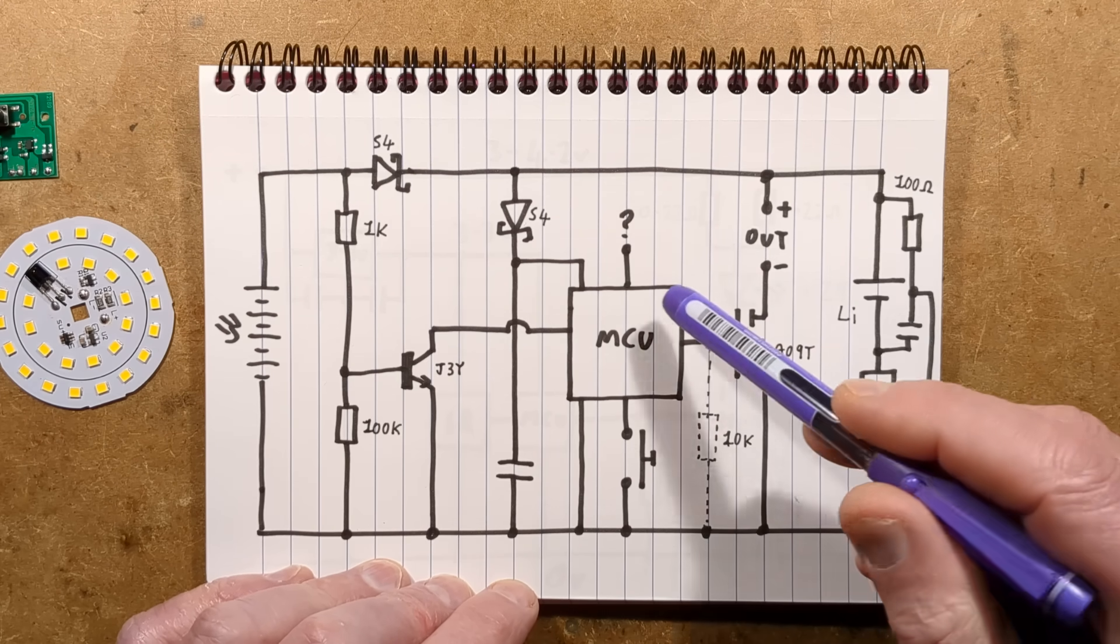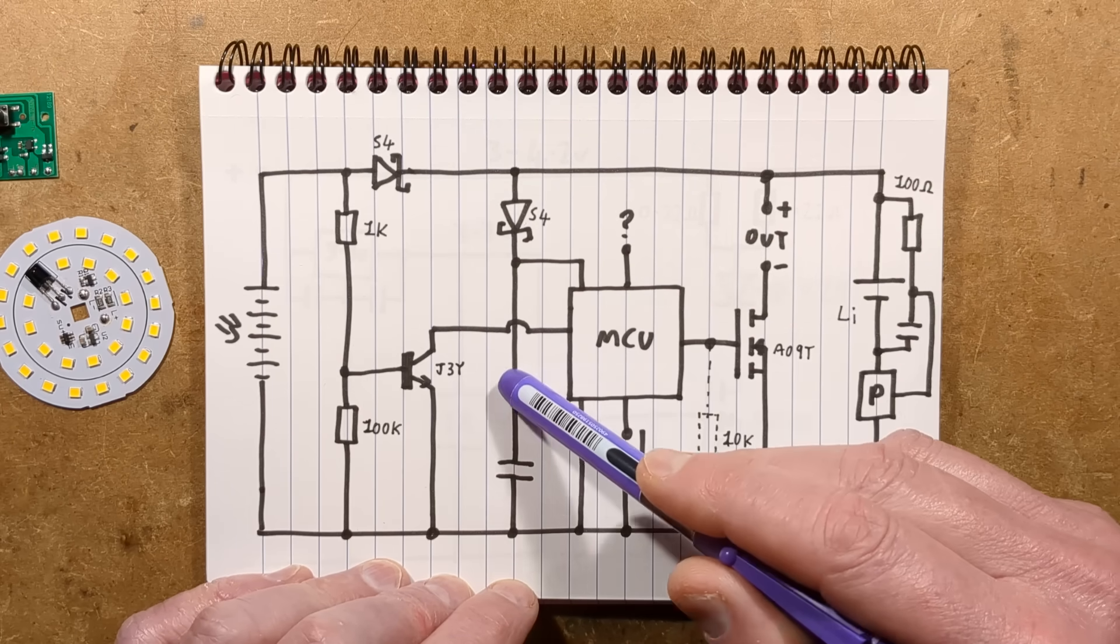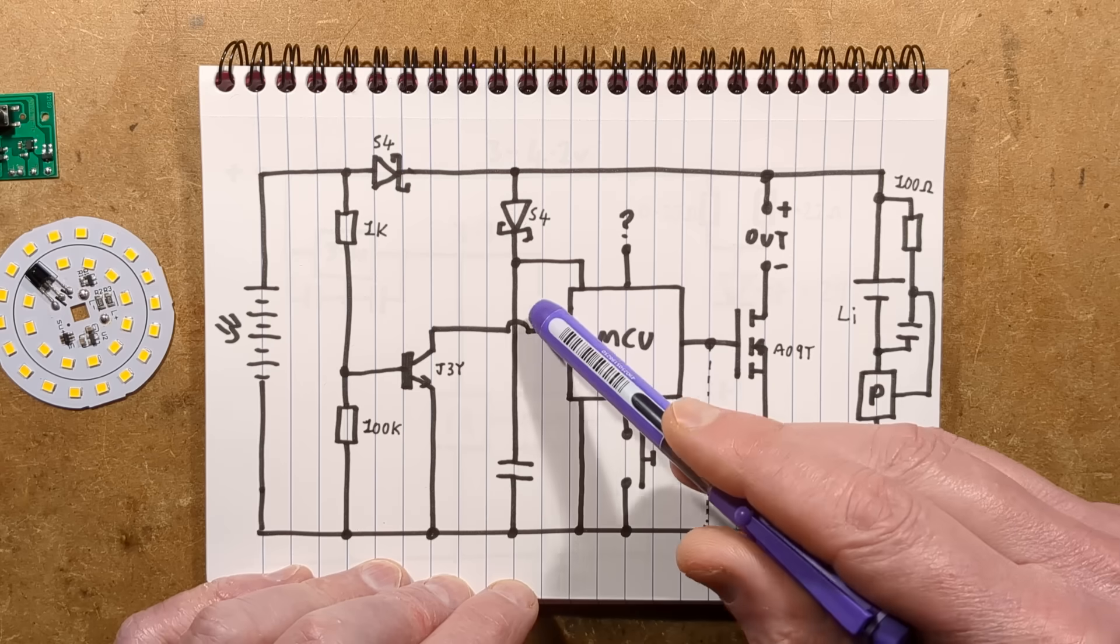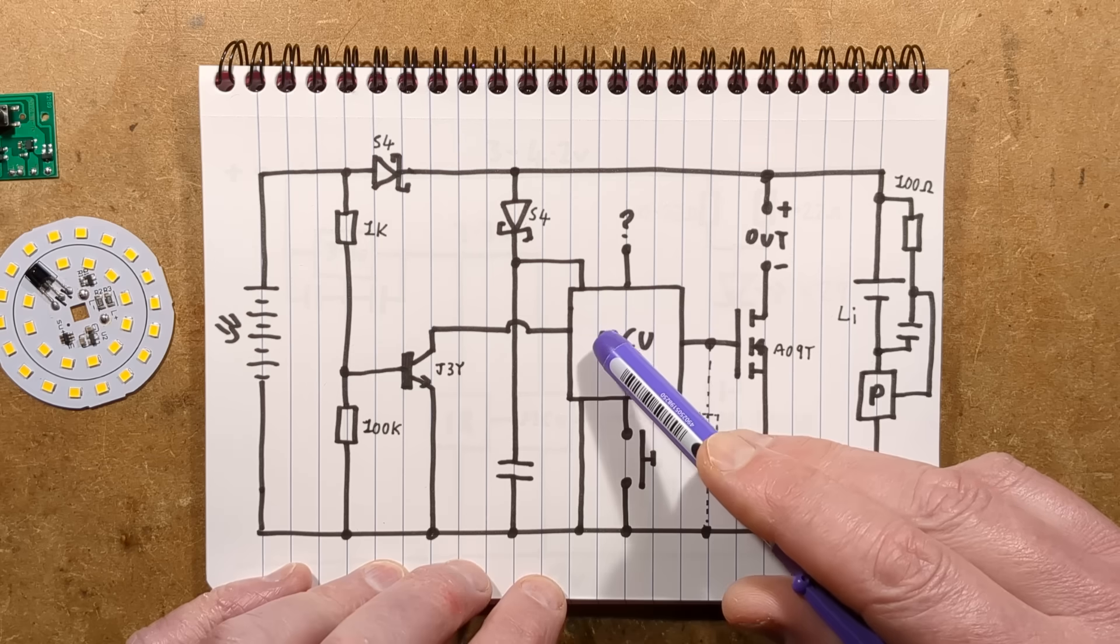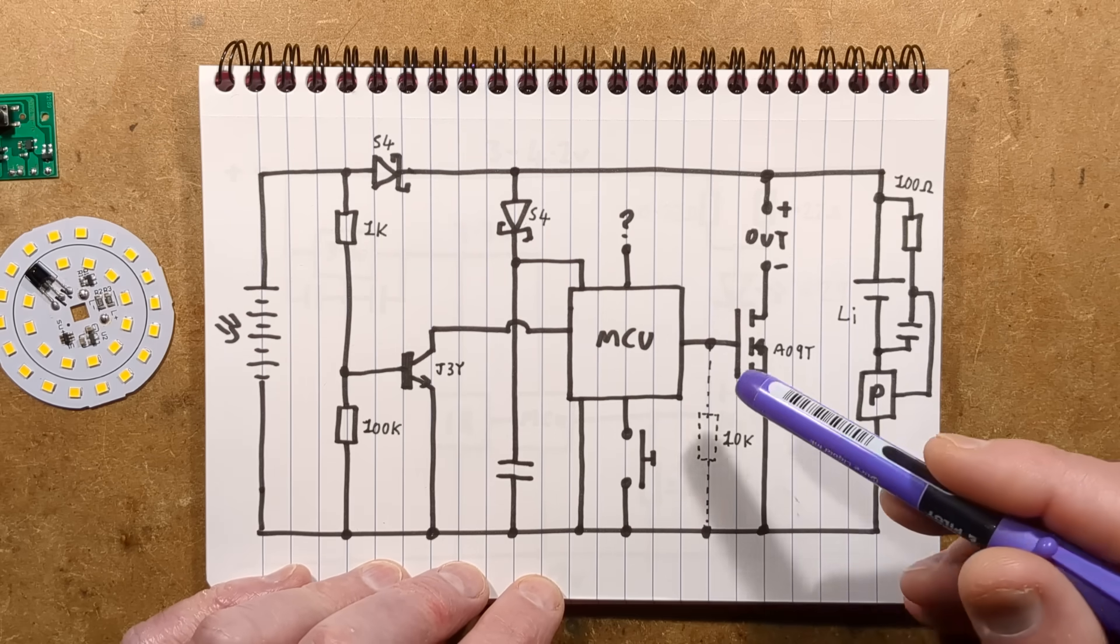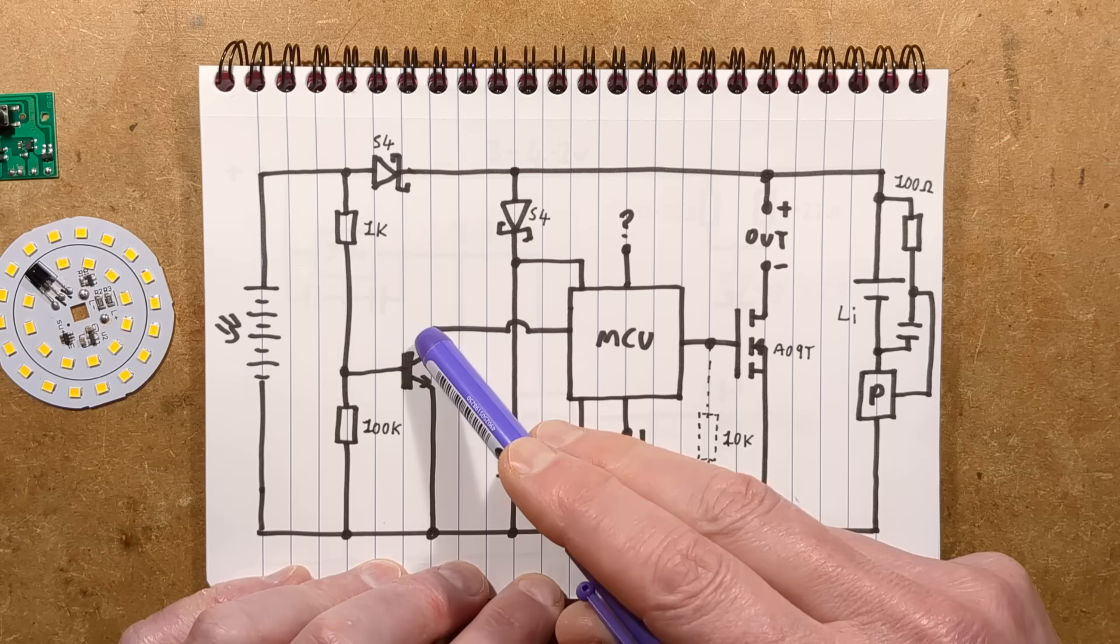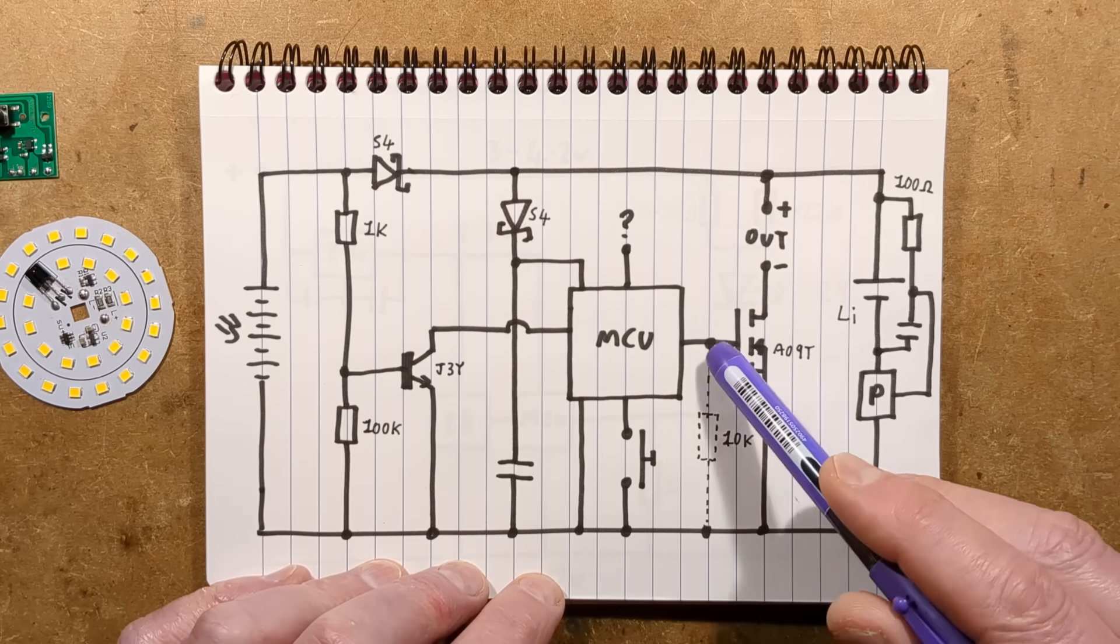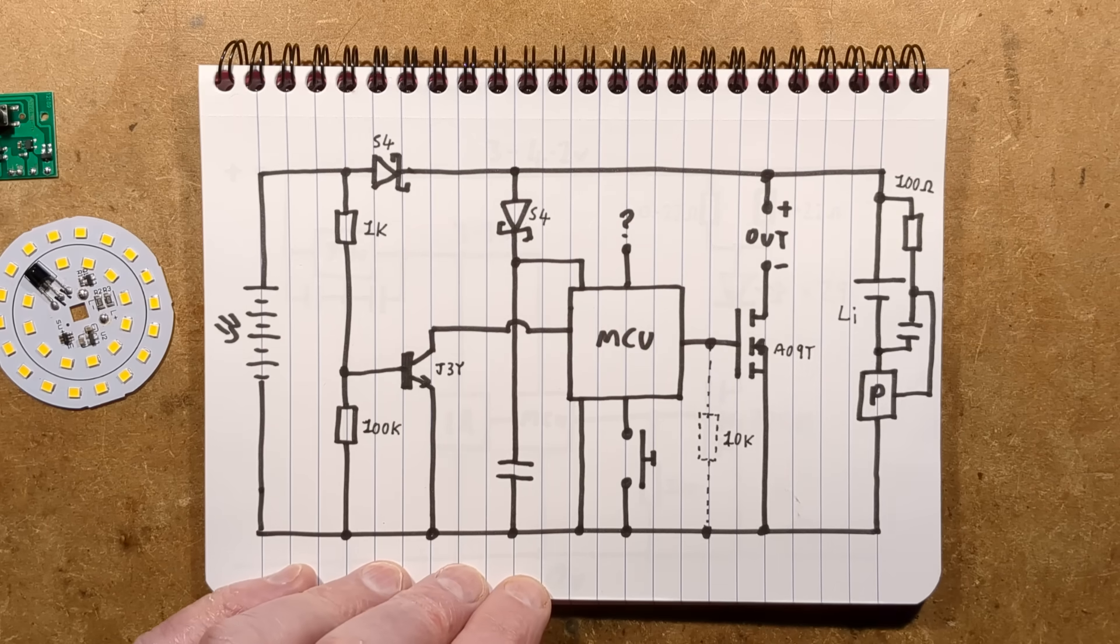it means that if the power, the voltage dips here, it won't actually be seen by the microcontroller. It sees a sort of charge on that capacitor, an average value. The microcontroller then reacts to the switch being pressed to turn on and off and reacts to the dusk input to turn this MOSFET on and off, an AO9T, and that just puts power out to the LED circuit.